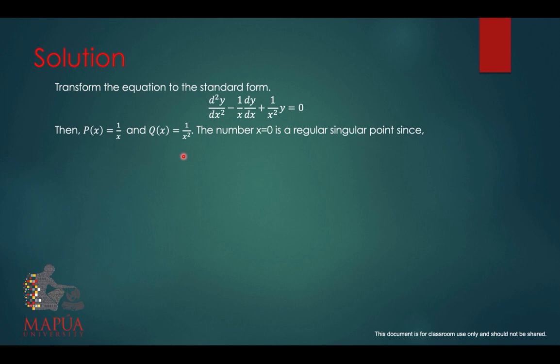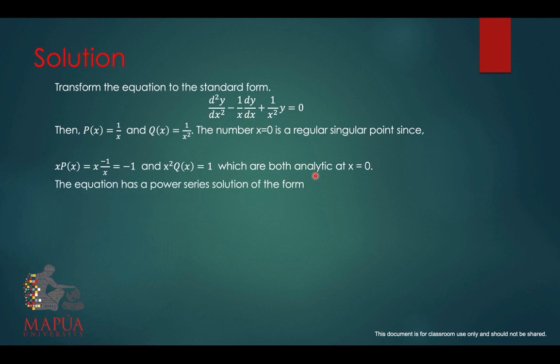But it is a regular singular point because if we multiply x by p of x, we get negative 1, and q of x by x squared we get 1. So both are defined at x equals 0, or both are analytic at x equals 0. Then the equation has a power series solution, or the Frobenius method guarantees that there is a power series solution in this form.